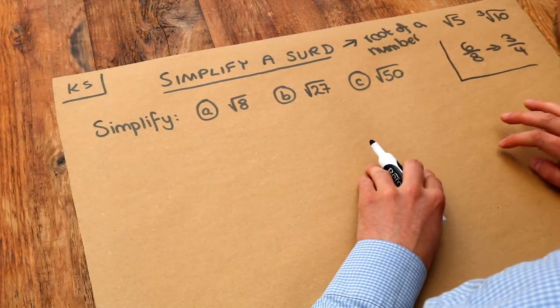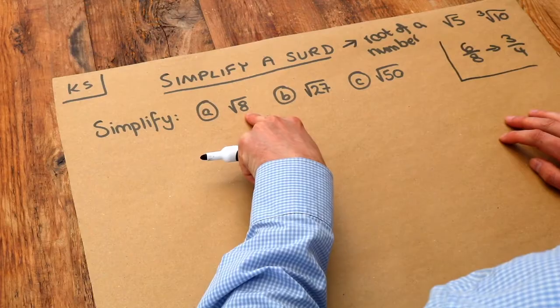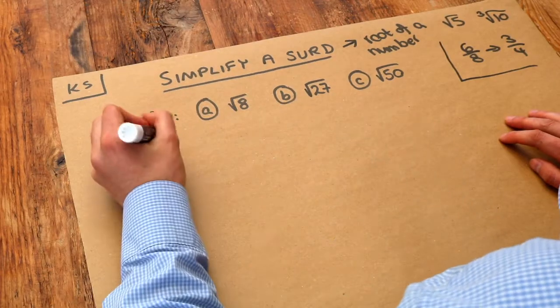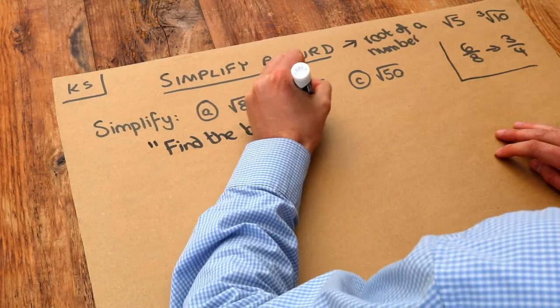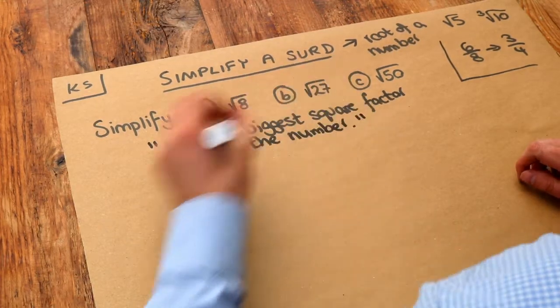And the way we do that is to find the biggest square factor that goes into that number. So let me write that down: find the biggest square factor of the number. So let's start with root 8.